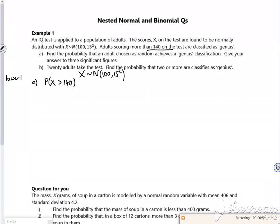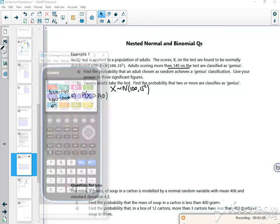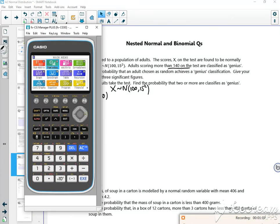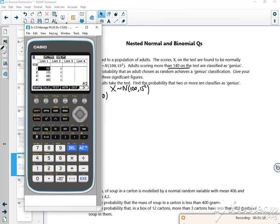Let's have a look on the calculator. For distribution normal NCD, you've got lower, upper, sigma, and mu. So lower is 140, upper 10,000, sigma we said was 15, and mu is 100. If you want to draw a nice little pretty picture...